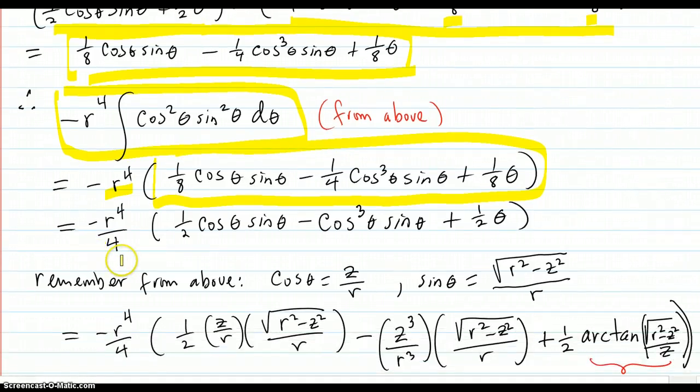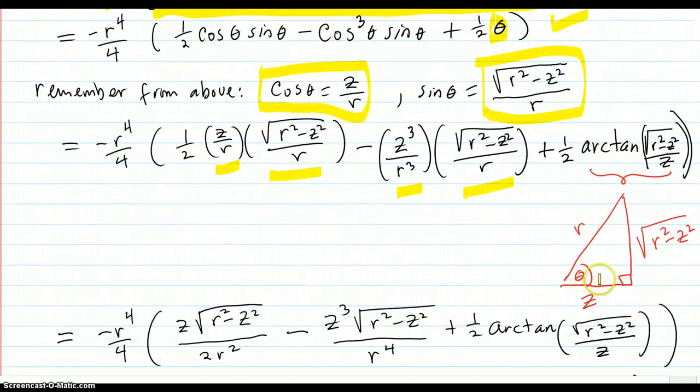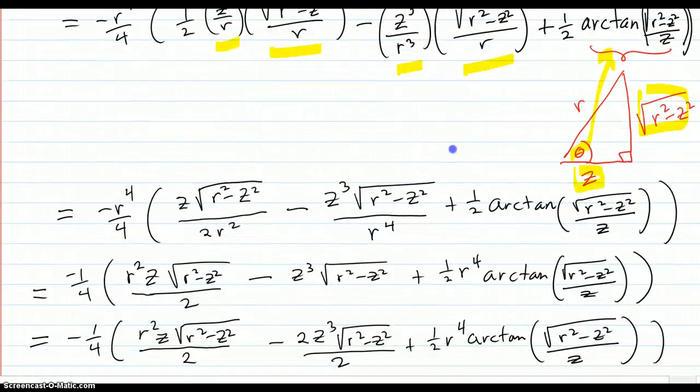And then I factor out a 1 fourth and left what's in there, trying to make it a little simpler. Then I remembered from above the definition of the z, r cosine was z over r on the triangle. And sine theta was this on the picture. So substituting those terms in for where they belong here. Now, this one, theta, what do you do for that? So back on the picture, here was the picture, here's your theta. So the tangent of theta is this term over z. So the arc tangent of square root of this over z is the angle. That is the angle. Okay. So that theta is that arc tangent.